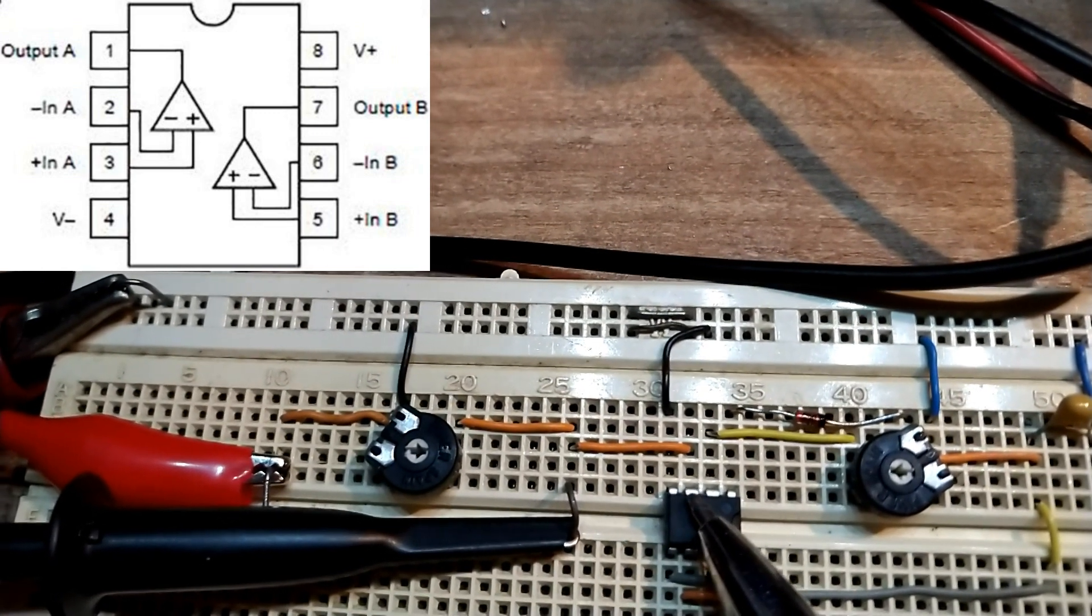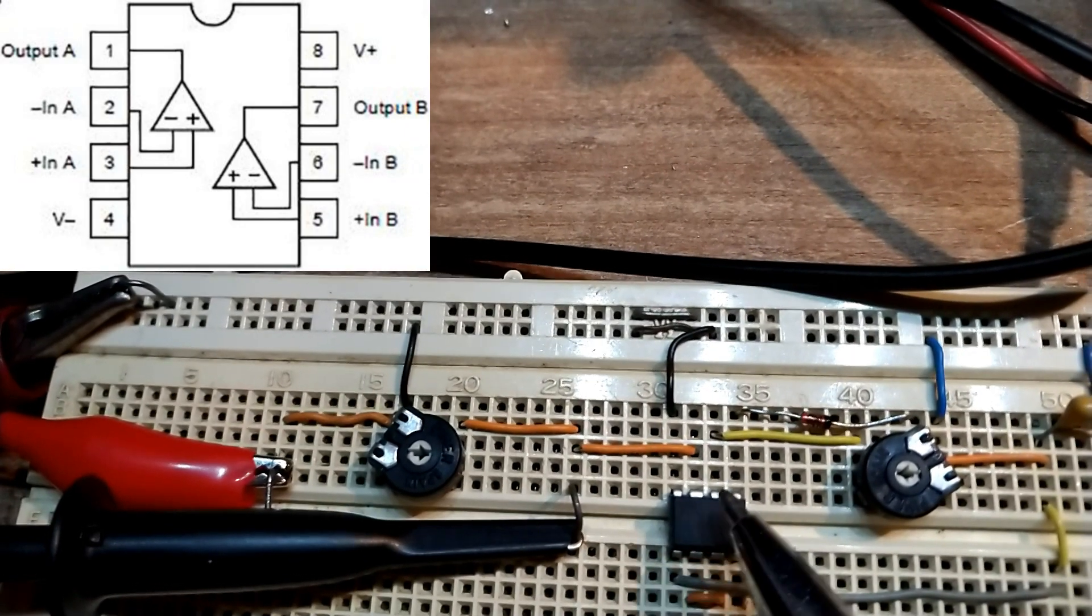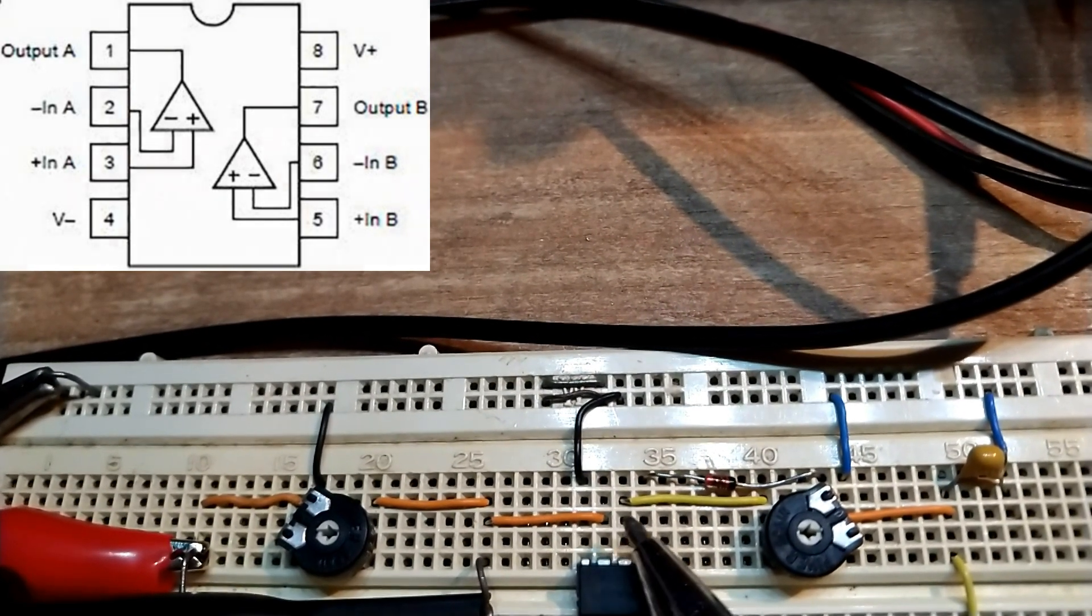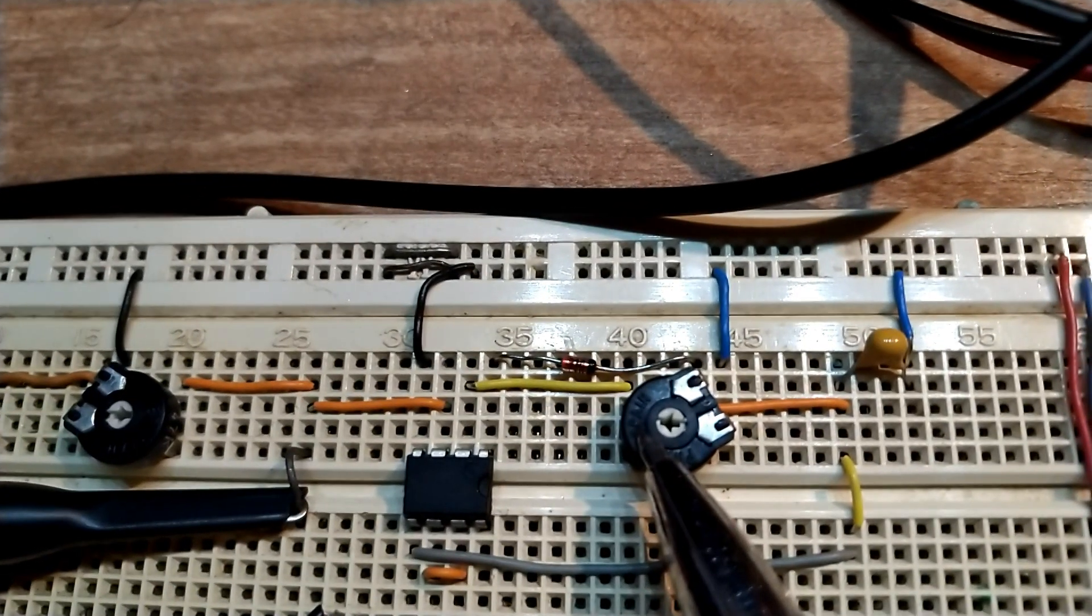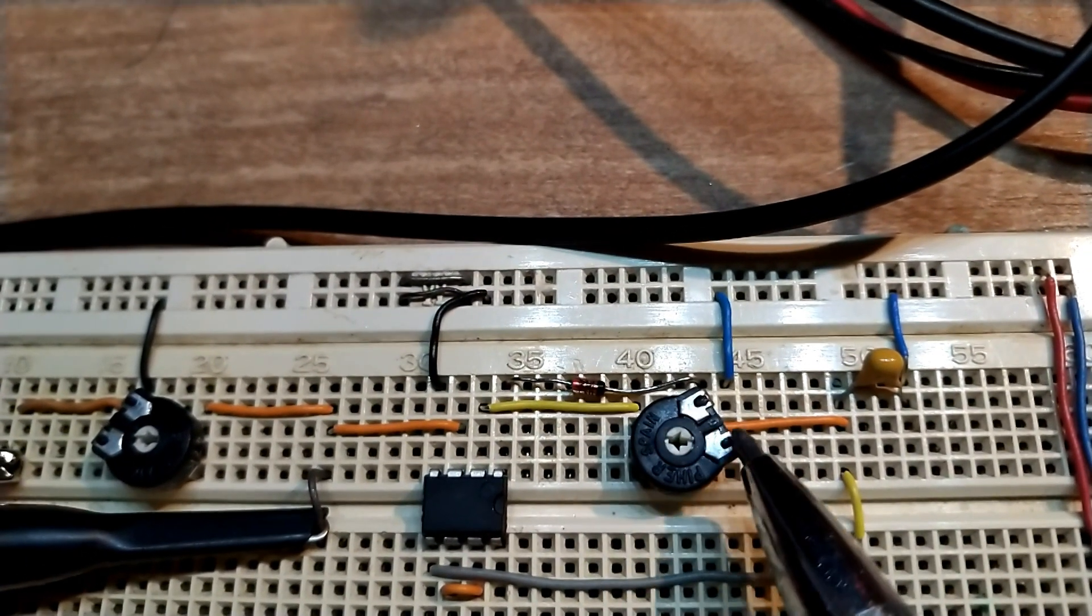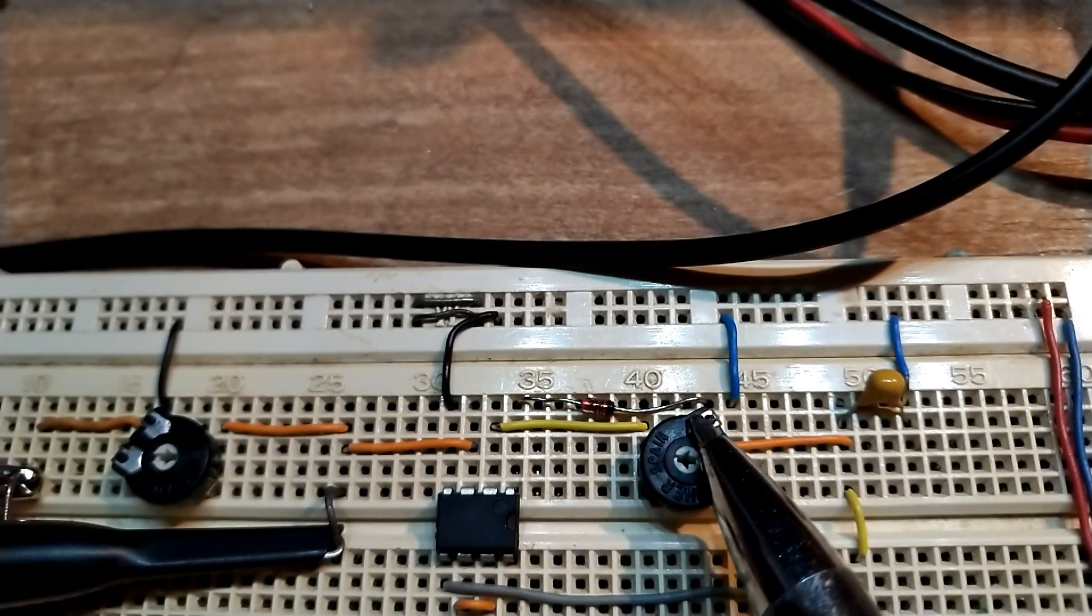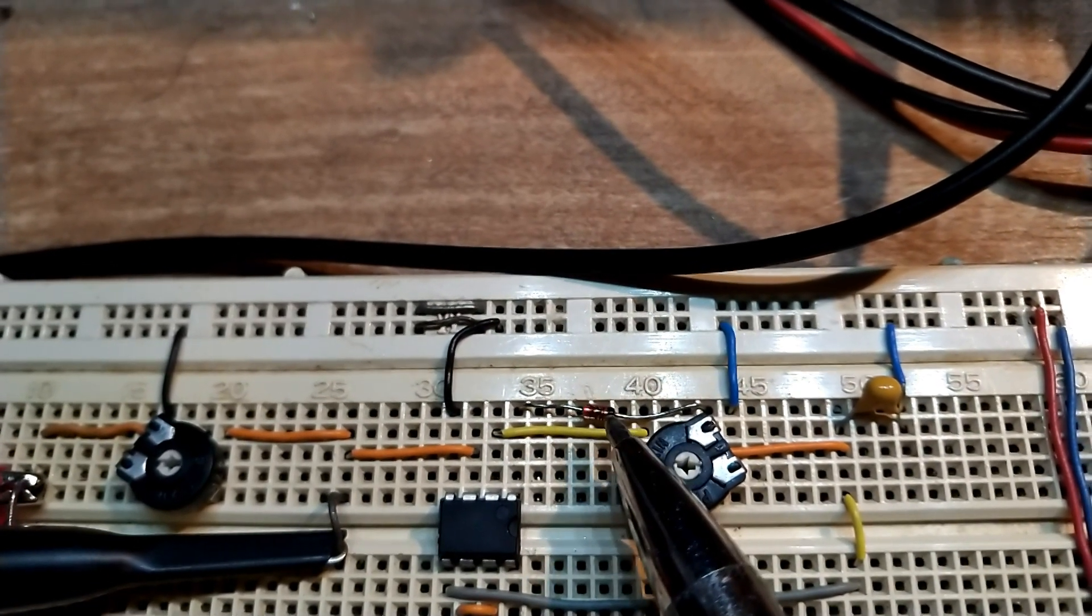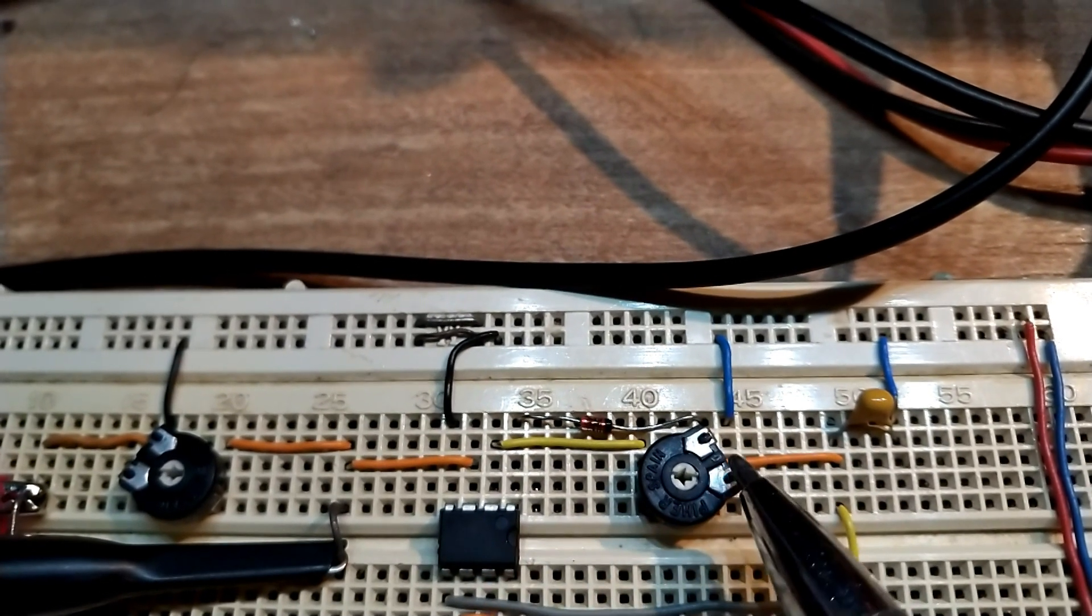This is the positive input, the negative input, and then the output. The negative input comes from the central pin of the trimmer we already depicted into the circuit. The two sides of the trimmer are one to ground and the other one from the cathode of the diode that is connected to the output.